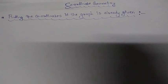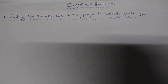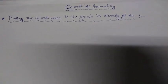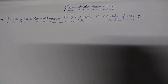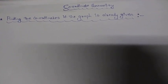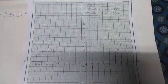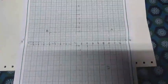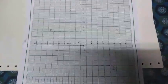In today's class a graph will be given already, and we have to find what are the coordinates of the points on the graph. Now we have a graph here — they have already plotted it and named the points as A, B, C and D.